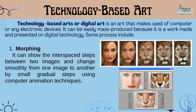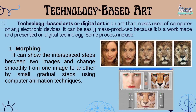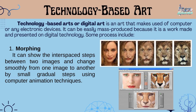Some processes include: Number 1, Morphing. It can show the interspaced steps between two images and change smoothly from one image to another by small gradual steps using computer animation techniques.